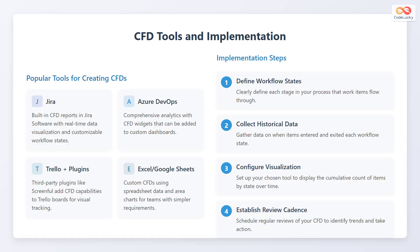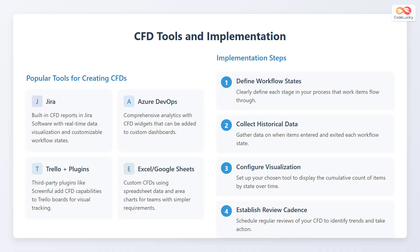Let's see the tools for implementing cumulative flow diagrams. Some popular tools for creating CFDs are Jira, which has built-in CFD reports with real-time data visualization and customizable workflow states. Next is Azure DevOps, which has comprehensive analytics with CFD widgets that can be added to custom dashboards. Trello Plus Plugins uses third-party plugins that add CFD capabilities to Trello boards for visual tracking. Excel or Google Sheets can be used to create custom CFDs using spreadsheet data and area charts for teams with simpler requirements.